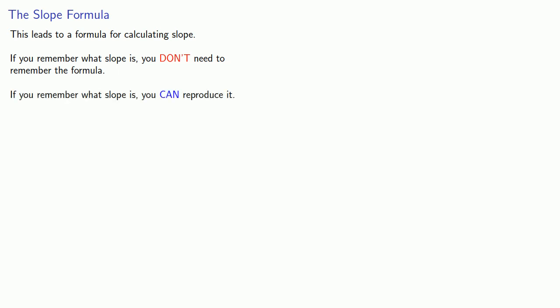If we put all of these ideas together, we get to a formula for calculating the slope. Remember, one of the worst ways to learn mathematics is to memorize a bunch of formulas. You should understand the concept. If you remember what slope is, if you remember this concept of rise over run, you don't actually need to remember the formula. If you keep in mind this concept of rise over run, you can reproduce or generate the formula.